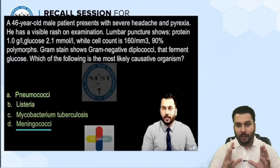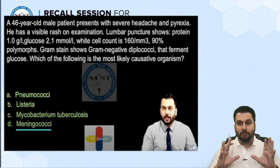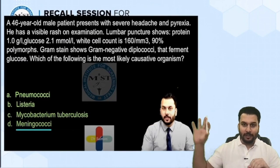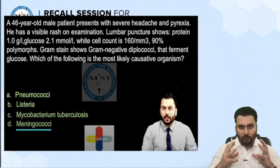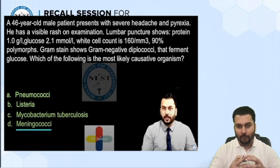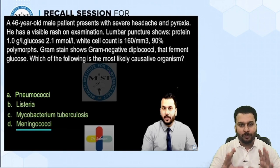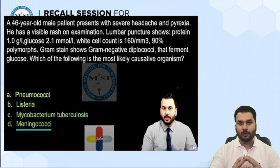In my previous discussion of 25 important questions, you can see a very similar picture was given — talking about glucose, white blood cell count, etc. — where the answer was meningococcus. Meningococcus is a bacterium, consistent with the bacterial meningitis diagnosis.